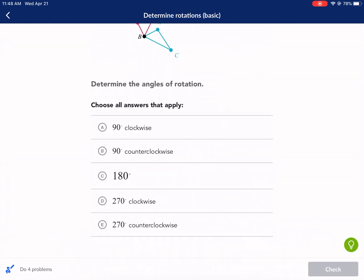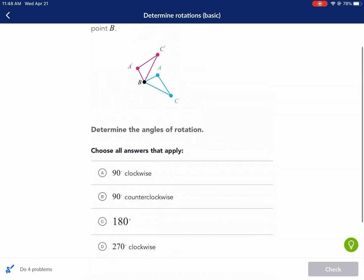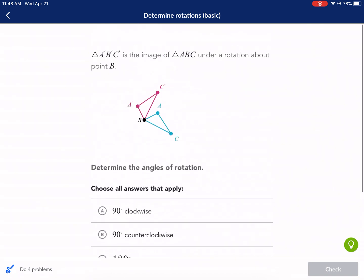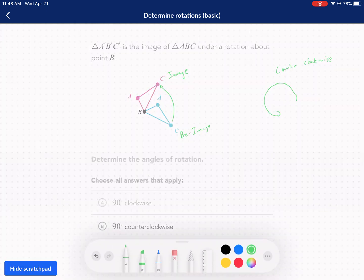180, it might be. And then D is also out. So it's either B, C, or E. Now, we need to determine if it's 270, 180, or 90.